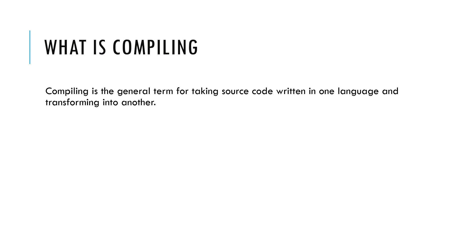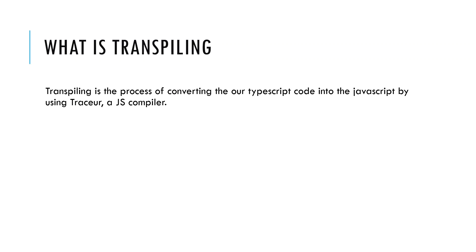What is compiling? Compiling is the general term for taking source code written in one language and transforming it into another. What is transpiling? Transpiling is the process of converting TypeScript code into JavaScript using the TypeScript or JS compiler.